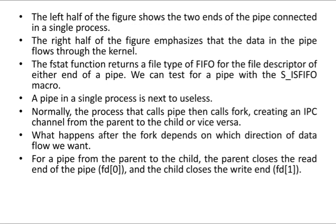Normally the process that calls pipe() then calls fork(), at which point the IPC channel is created from parent to child or child to parent. What happens after the fork depends on which direction of data flow is desired.